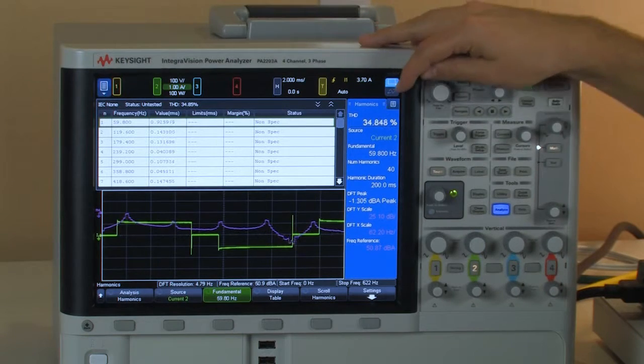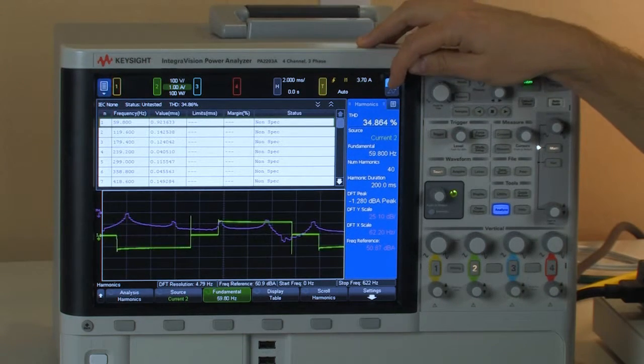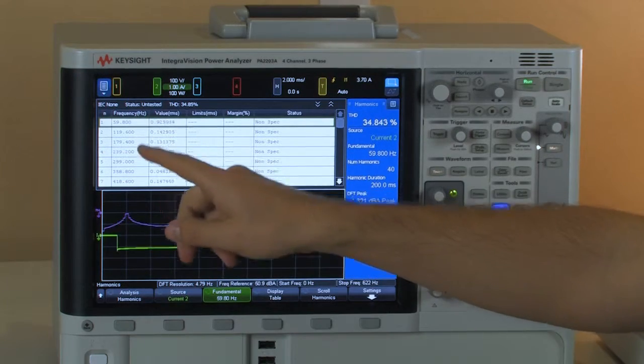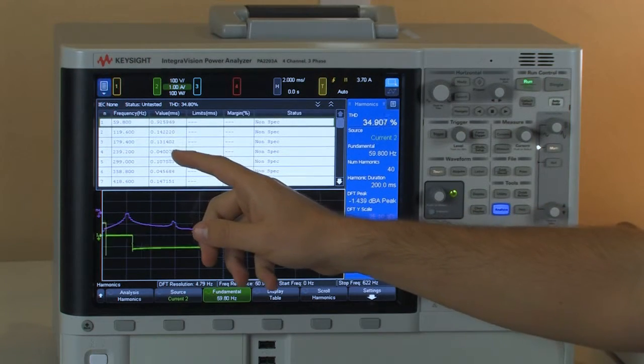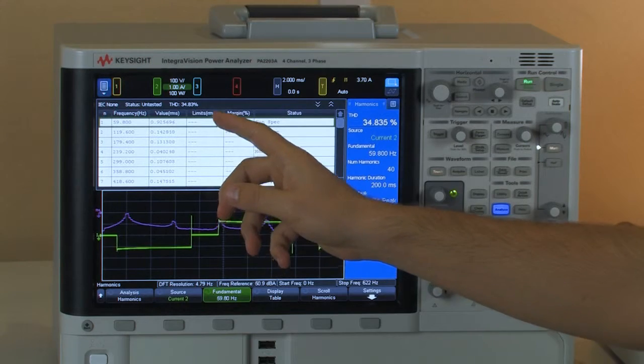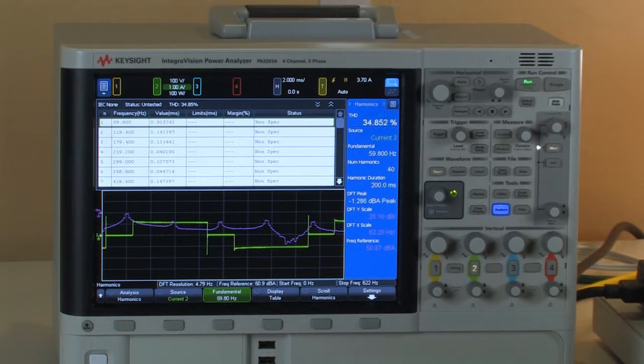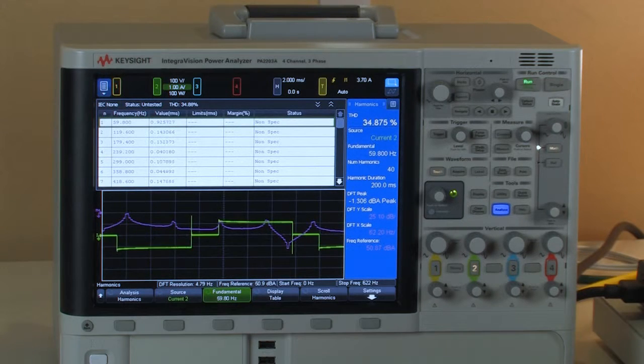So you can see we have a sidebar here showing your THD and a table view with the harmonic number, the frequency, the value in RMS. And then you can see the limits and margin and status are all blank right now. That's because I haven't started the test quite yet.